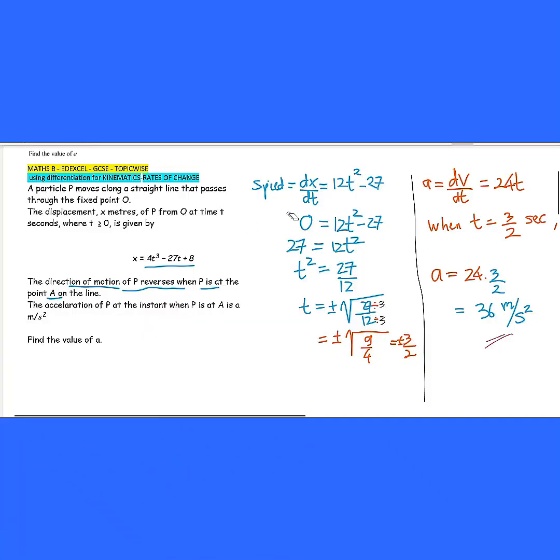So guys, we take the acceleration a equals to derivative of v, the speed is v over dt. So this is here, 12t². We take down the 2, 12 times 2 become 24, and then the t² the 2 reduced by 1 to become t to the power of 1. So we write t. And the derivative of a constant is 0.